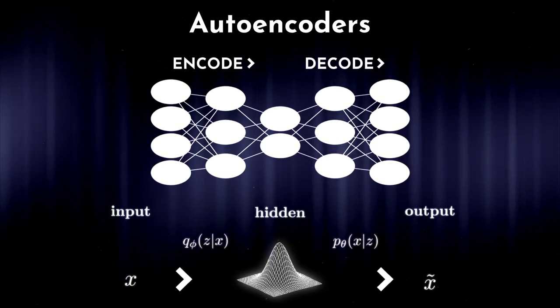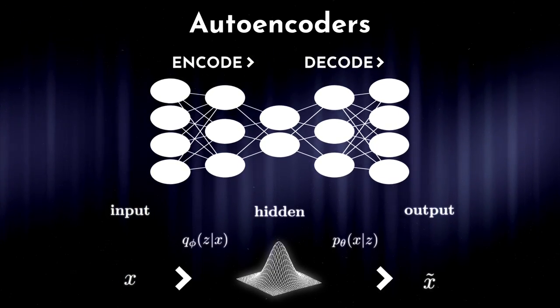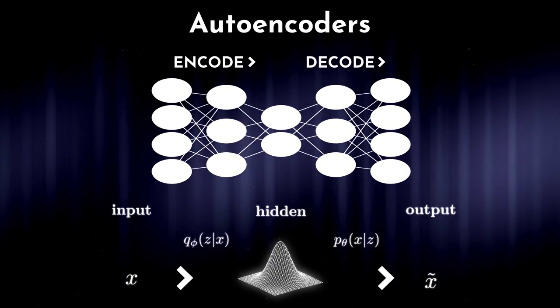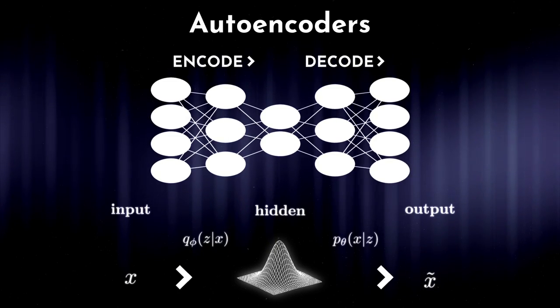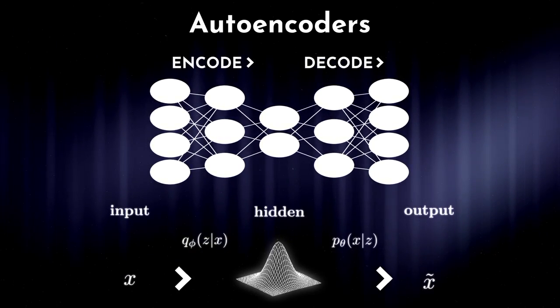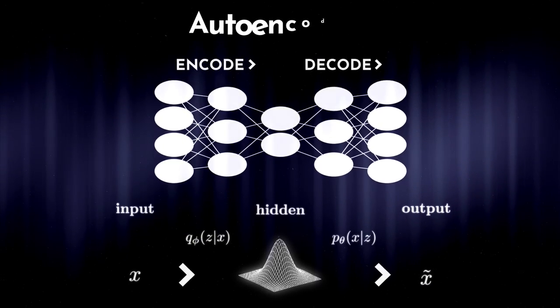Then they attempt to reconstruct the output from this representation. We'd use two neural networks here, an encoder network that learns the probability of the hidden space given the input, and a decoder model which learns the probability of the input given the hidden space, which will reconstruct the input as the output.